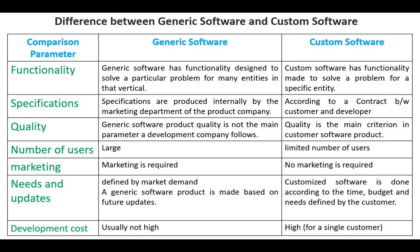The next parameter is quality. In custom software, quality is the main criterion, while in generic software, quality is not the main parameter a development company follows. Generic software usually has a large number of users, while in custom software the number of users is limited. In generic software, marketing is required, while in custom software, no marketing is required.